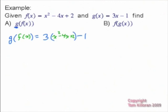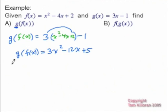And then just simplify. So we have g of f of x is equal to 3x squared minus 12x. And here we'll have a plus 6 and then minus 1, which would be plus 5. So g of f of x is just 3x squared minus 12x plus 5.